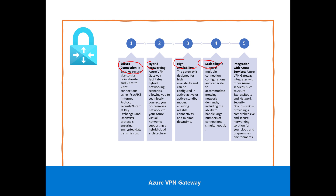Azure VPN Gateway integrates with other Azure services such as Azure ExpressRoute, Network Security Groups (NSGs), providing a comprehensive and secure networking solution for your cloud and on-premises environment. Now we are going to see step by step how to configure Azure VPN Gateway and how to connect securely to our virtual machine.